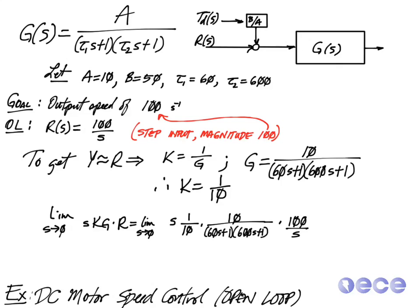60S plus 1 times 600S plus 1, times my R reference input, which is 100 over S. So I do a little bit of canceling, set S equal to 0, and I end up with a value of 100 for Y equal to infinity, Y tending towards infinity time. So this gives me a steady state value of Y of 100.